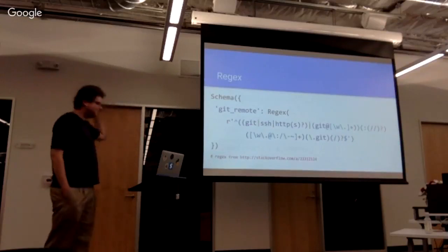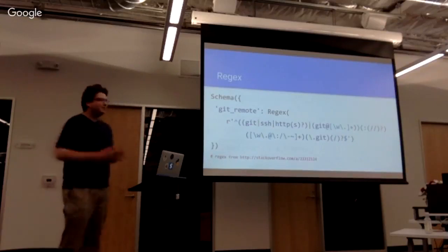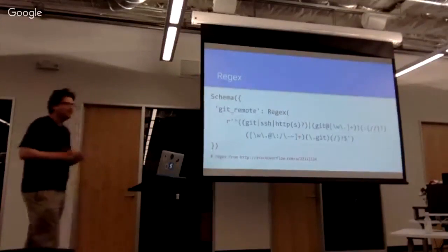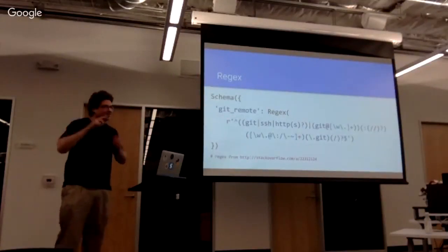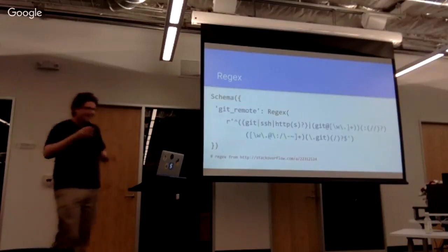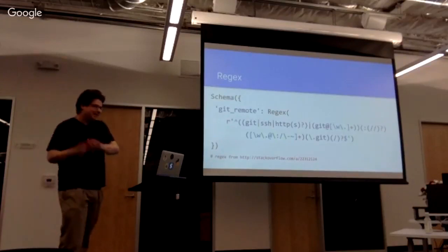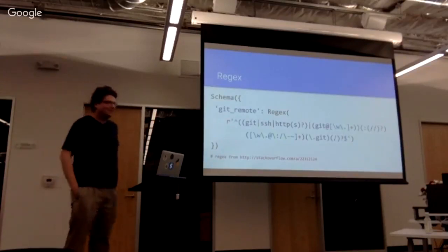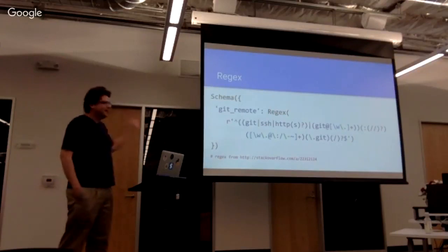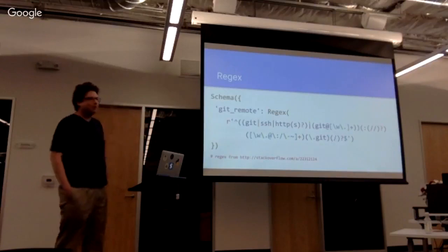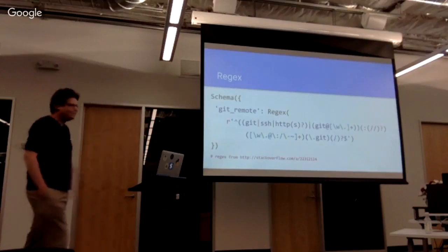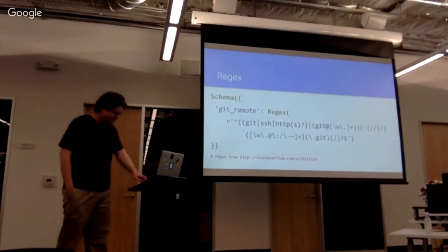And last example, this is another one from our code. You may have some configuration file that you specify a git remote, but what if you typo a git remote? For example, is it a colon or a slash? Off the top of your head, is it a colon or a slash when it's HTTP or when it's git for the git remote? And this will kind of validate that so that instead of getting a git error some weird error way downstream, you can validate it right when you parse the configuration file.